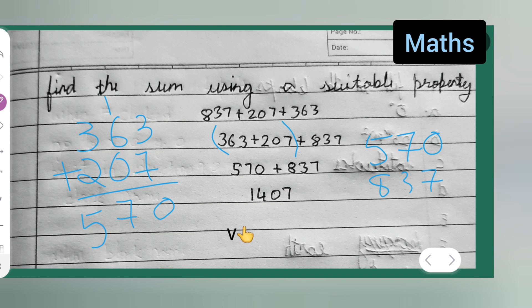So, 7 plus 0 will be 7, 7 plus 3 will be 10, 8 plus 5 plus 1 will be 14.